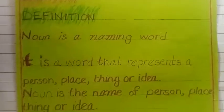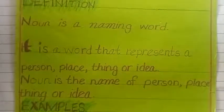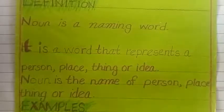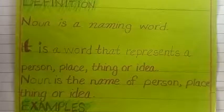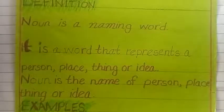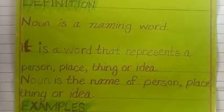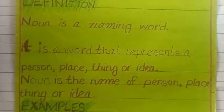Noun is a naming word. Or we can say it is a word that represents a person, place, thing, or idea. Like any person has a name. Place — we are living somewhere, we are living in some city. That is Peshawar. Peshawar is a naming word, it is a noun. We are living in Pakistan. Pakistan is a noun, it is a place. Anything — like you are wearing a shirt, shirt is a noun because it comes in the things category. Like you are sitting on a sofa, a chair, or a floor — floor, chair, these are nouns, or any idea. This is called noun.